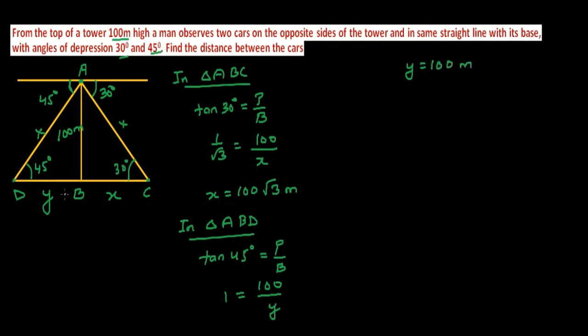Now we have to find the length of CD. That is CD equal to X plus Y. The length of X was 100 root 3 plus the length of Y is 100. So if you take 100 common from here, you will get root 3 plus 1 meters. Therefore, the distance between the cars is 100 root 3 plus 1 meters.